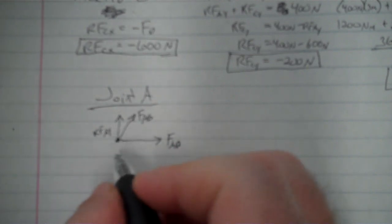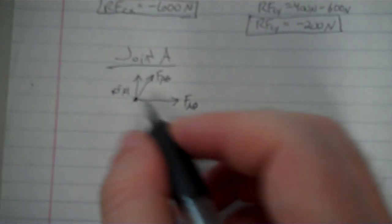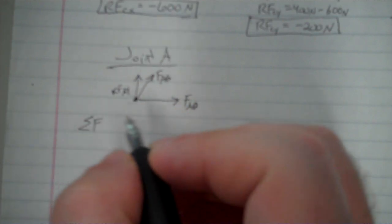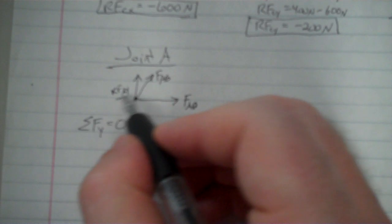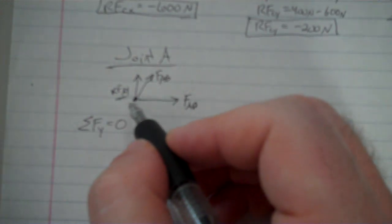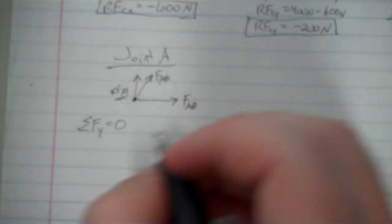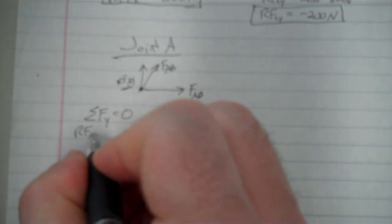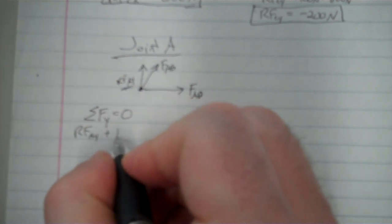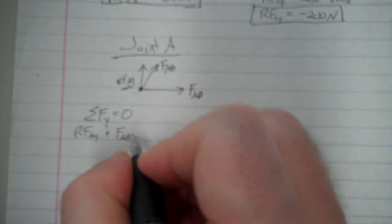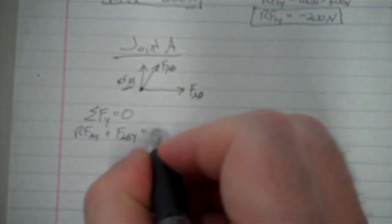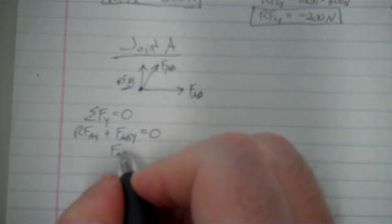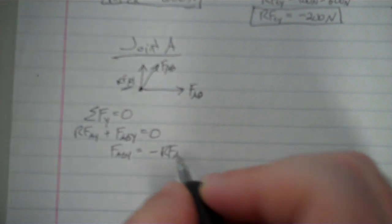Again, we're not going to do moments with this, but we're still going to sum the forces. All these forces should add up to zero. So sum of the forces in the Y direction, and I'm going to start with that, because I know one of the forces in the Y direction. I know RFAY. So RFAY plus FAB in the Y direction, which means the Y component of this guy, is going to equal zero.